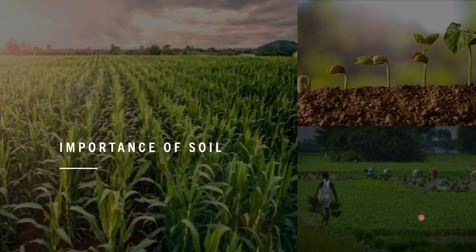The rich, deep soil of the Ganga Plain, especially the deltas and the coastal plains of Kerala, support a very high density of population through agricultural prosperity.